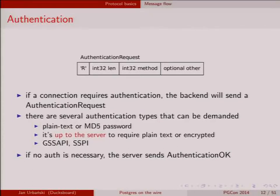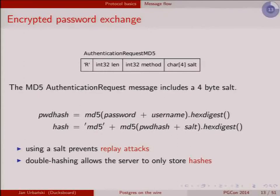There are more advanced auth kinds: GSS API authentication, SSPI, and other methods. For MD5 — the most common password authentication — the server sends an authentication request that identifies it as MD5 and includes a salt. The client hashes the password and username together, then hashes that result with the salt, prepends an 'md5' string, and sends it off. The server uses this to decide whether you're authenticated.